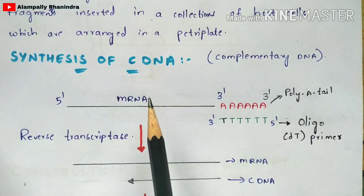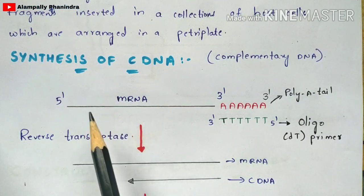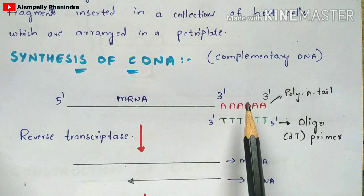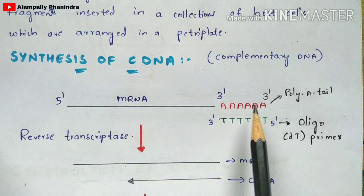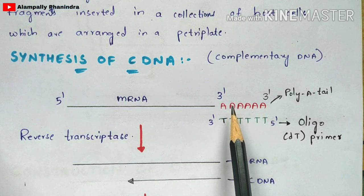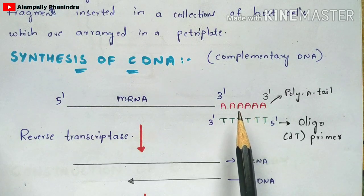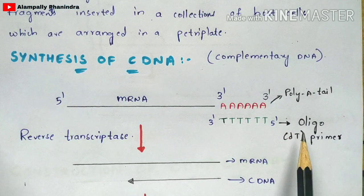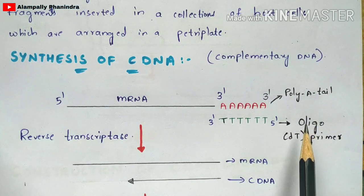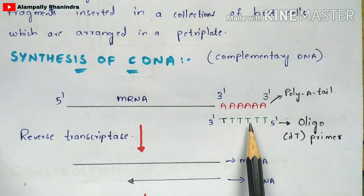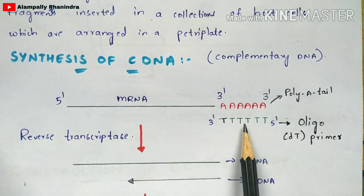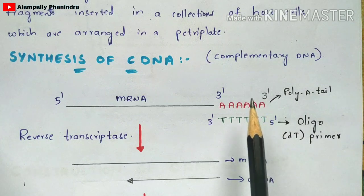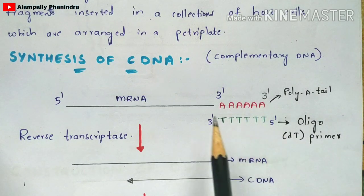This mRNA consists of a five prime end as well as a three prime end, and at the three prime end a poly-A tail is present. Poly-A tail means adenine nucleotide residues are present at the three prime end. Now, you are going to add an oligo-dT primer. This oligo-dT primer consists of thymine nucleotides, and thymine nucleotides will be complementary to the adenine nucleotides of the poly-A tail. So you add this oligo-dT primer to the mRNA.